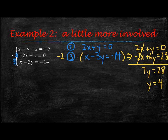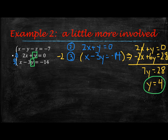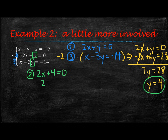So then I'm going to take this y that's equal to 4 and plug it into either equation 2 or equation 3 to solve for x. I'm going to do it in equation 2 because I have smaller numbers. So 2x plus 4 equals 0, which gives you 2x equals negative 4, and x equals negative 2.